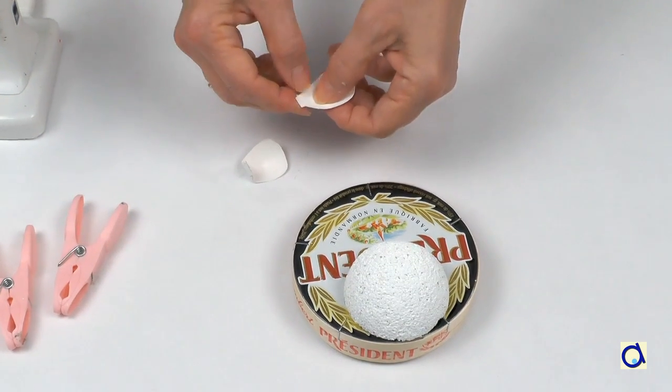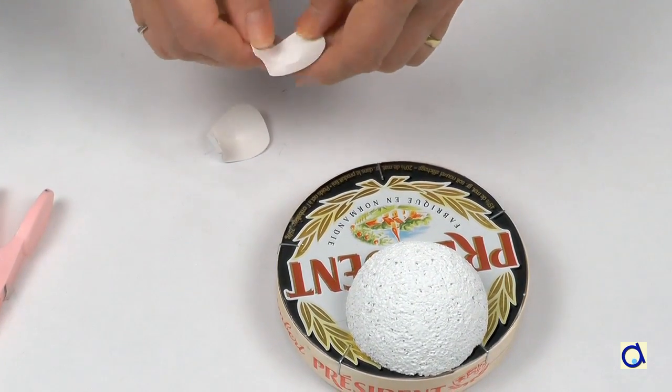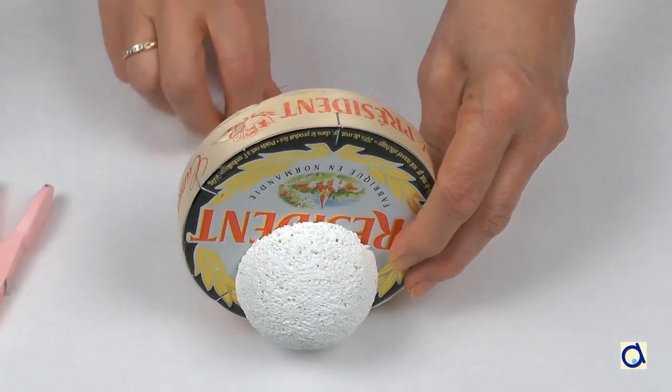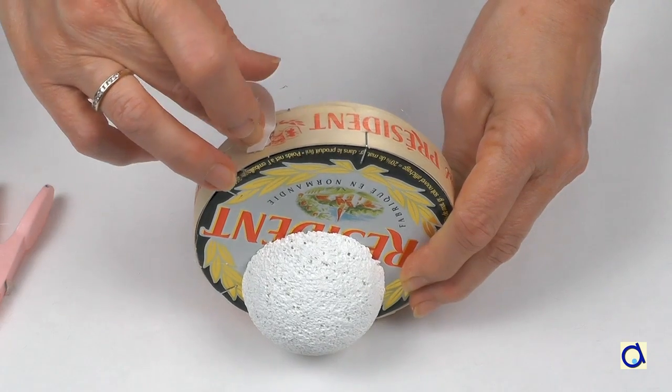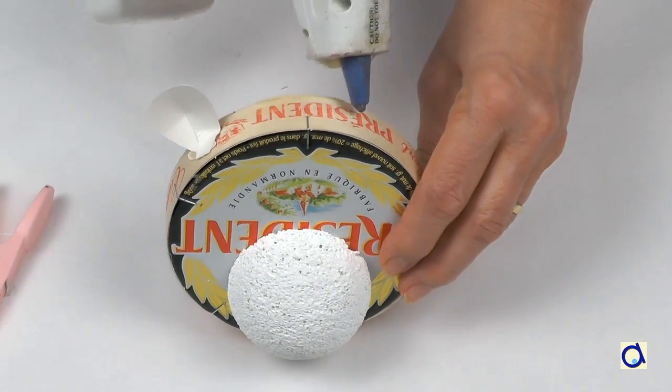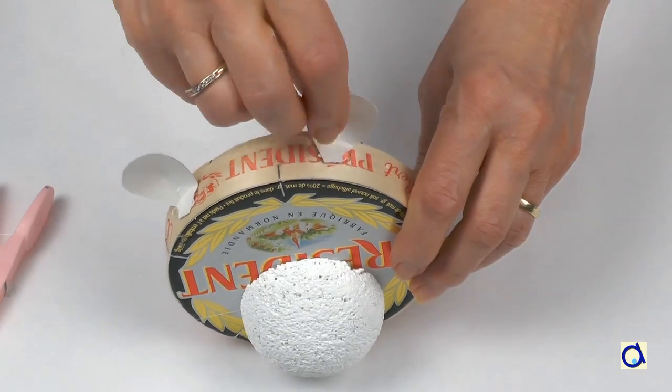Fold the bottom of the ear at the right angle to create the tab. Glue the ears to the top of the Camembert box with hot glue. The top is the side opposite to the snout.